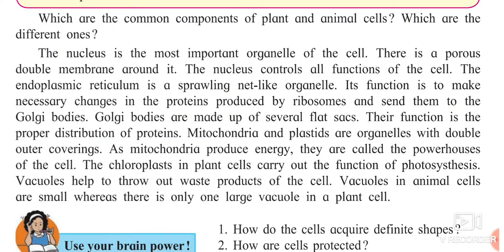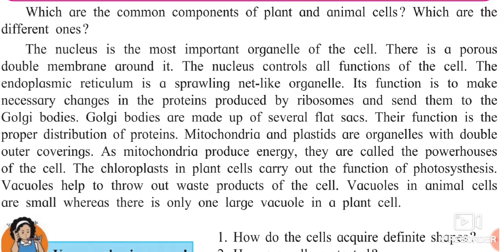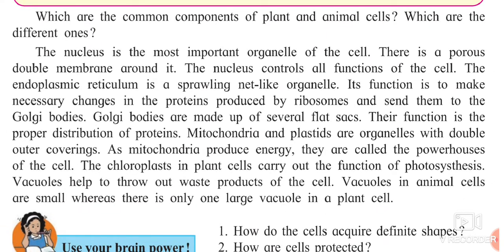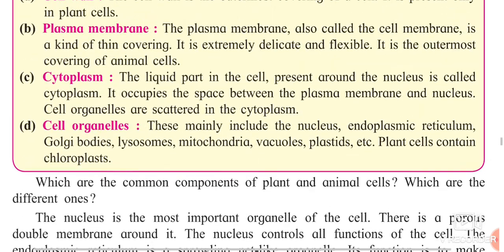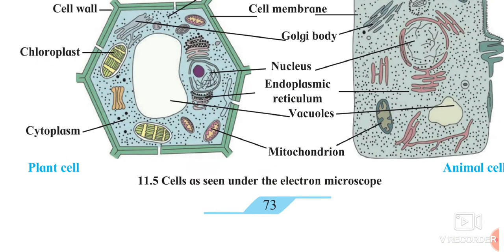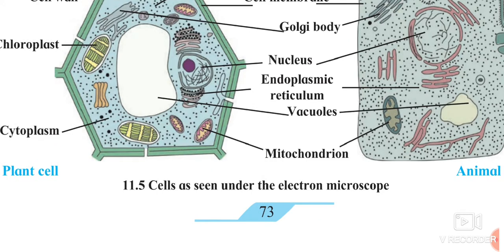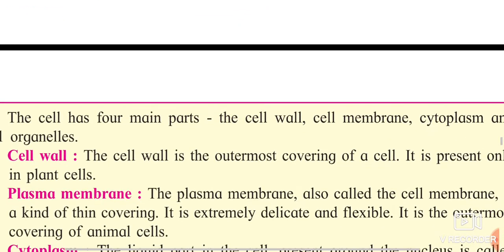Chloroplasts, which are present in plant cells, carry out the function of photosynthesis. Vacuoles help to throw out the waste subproducts of the cell. Vacuoles in animal cells are small whereas in plant cells they are large. Animals have specific organs for excretion, so they can throw out waste easily, but plants use vacuoles within the cell for this purpose.